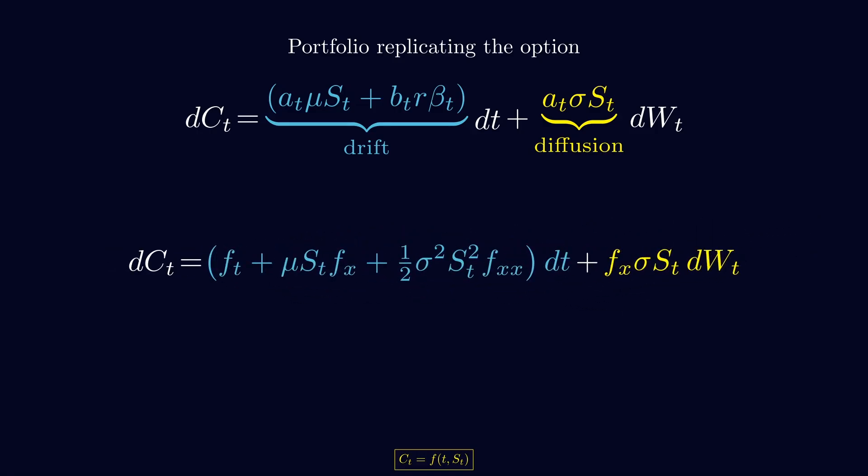Now, we have two expressions for the portfolio's drift and diffusion, one from the stock plus bond view, and one from Ito's Lemma. Let's match them and solve for A and B. Let's start with A. We see that A, the number of shares we must hold, is proportional to how sensitive the option price is to the stock price. In precise terms, A equal the option's delta. So, if a small move in the stock makes the option move a lot, we should hold more stock. If the option barely reacts to the stock, for example, when the call option is worthless because the stock price is well below the strike price, we don't need much stock. We can hold more cash instead.